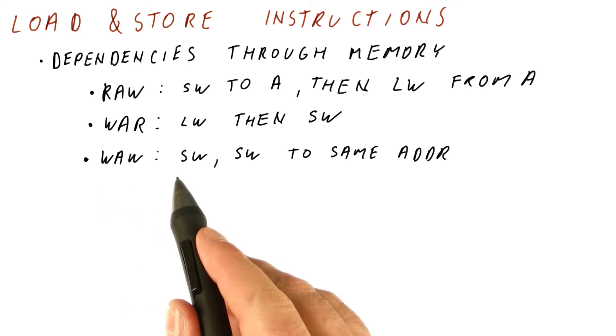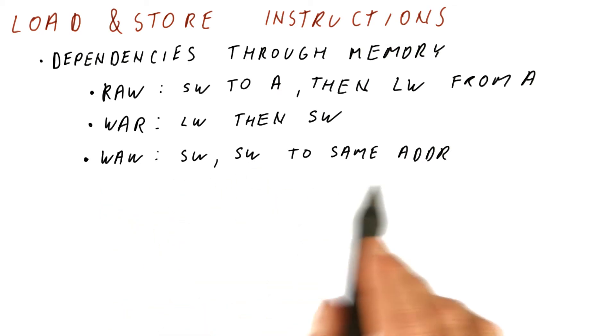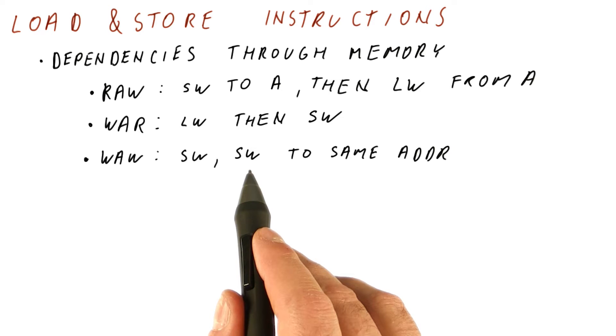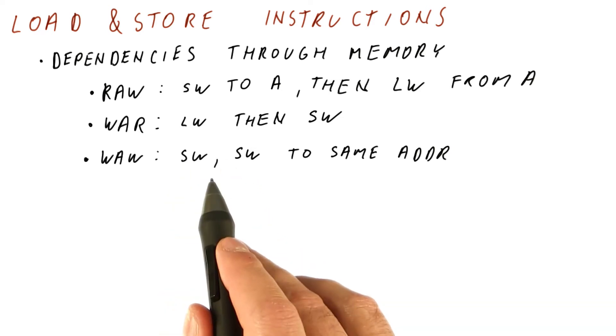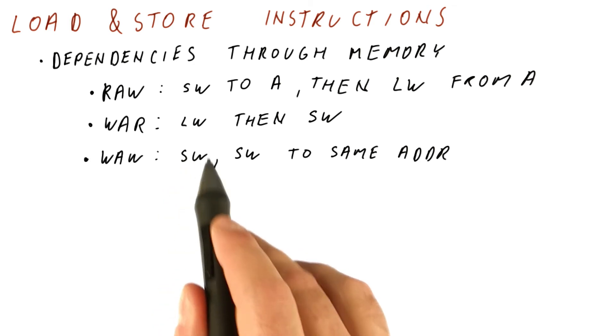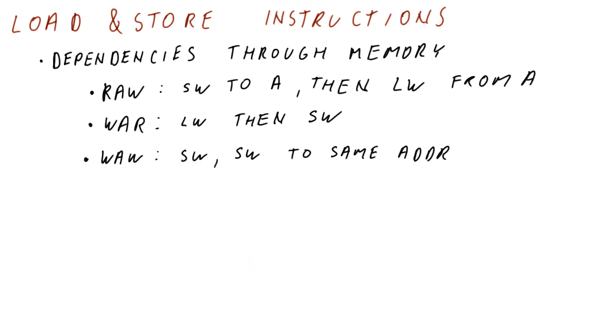Finally, we can have a write-after-write dependency. If there are two stores that store to the same address, the last one should leave the value at the end of that sequence. But if we reorder them, the value in memory ends up being the stale value from the first of the stores.